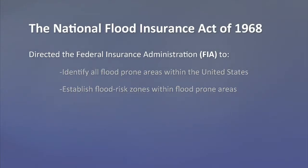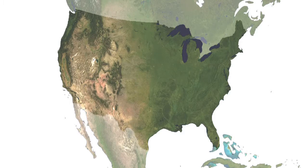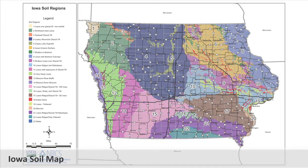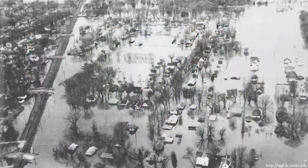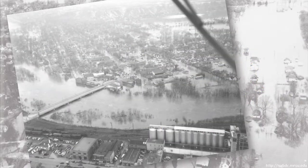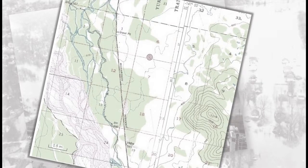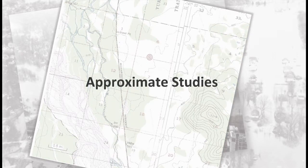The National Flood Insurance Act of 1968 directed the Federal Insurance Administration, or FIA, to identify all flood-prone areas within the United States and establish flood risk zones within those flood-prone areas. Because the mandate was to map the entire United States, the FIA could not afford to conduct detailed engineering studies or hydraulic analyses. Instead, it used information from existing sources such as soils maps, historical high-water records, aerial photographs of previous floods, and topographic maps to identify areas likely to be susceptible to inundation by the base flood event. These map products were known as approximate studies.